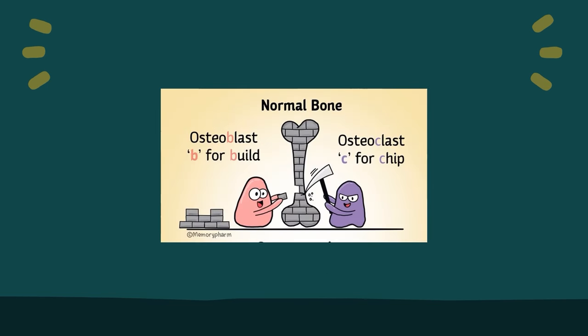An easy way to remember this is using this mnemonic: osteoblast — the letter B stands for build — meaning it helps form new bone tissue. Whereas osteoclast — the letter C helps you remember that C is for chip — meaning it helps break down or chip away old bone tissue.